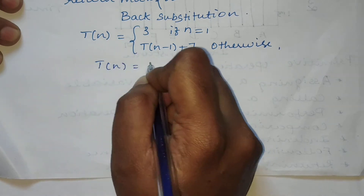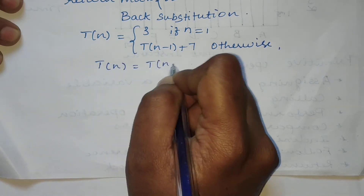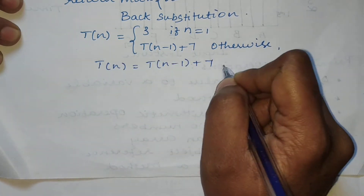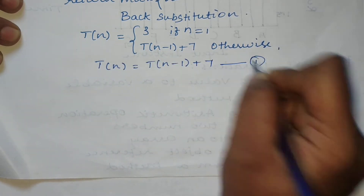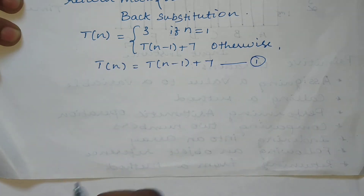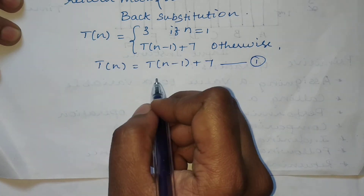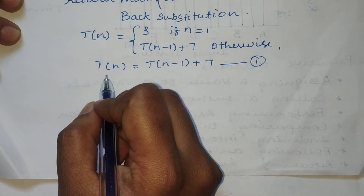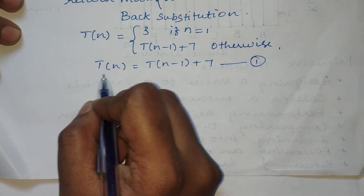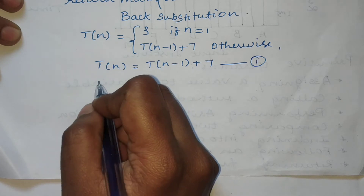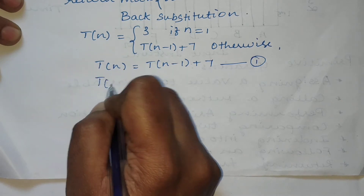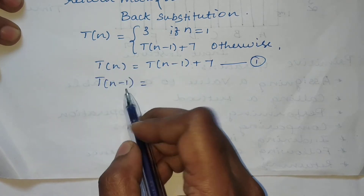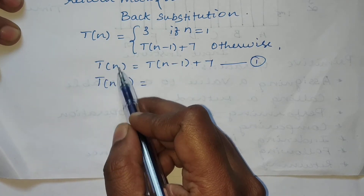First we will write the recurrence relation: T(n) = T(n-1) + 7. This is the first equation. Now we're going to find out the value of T(n-1).